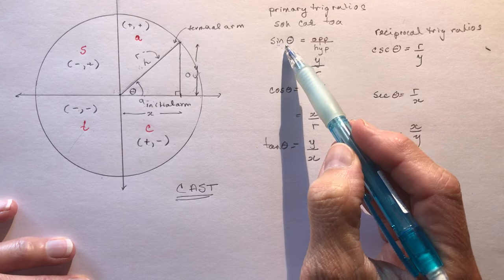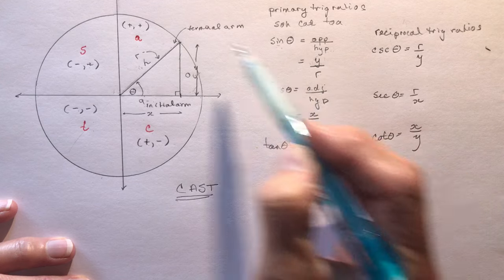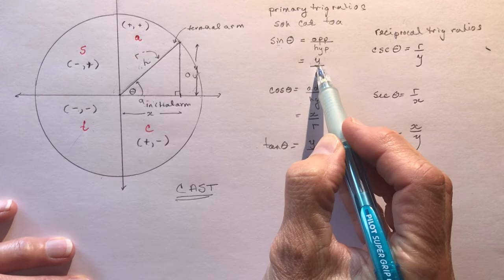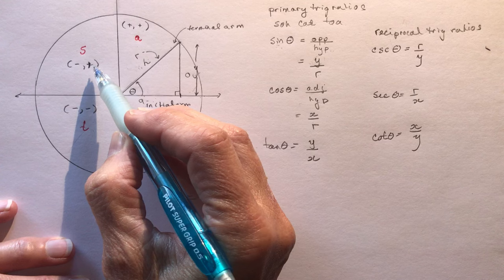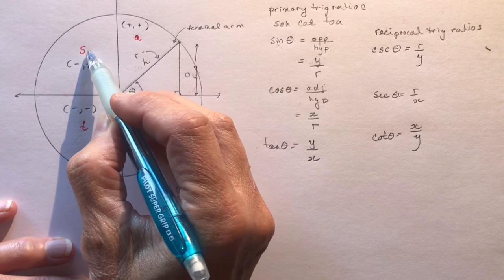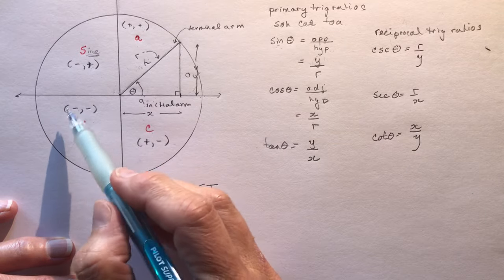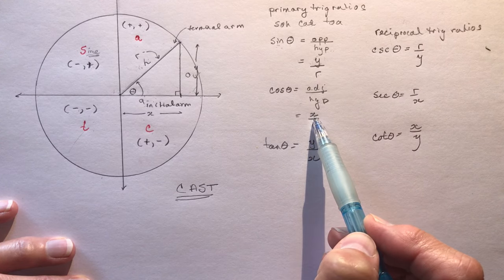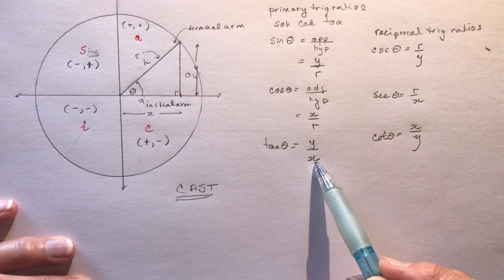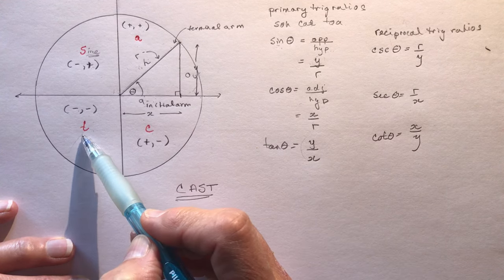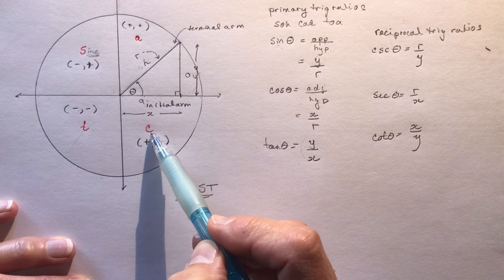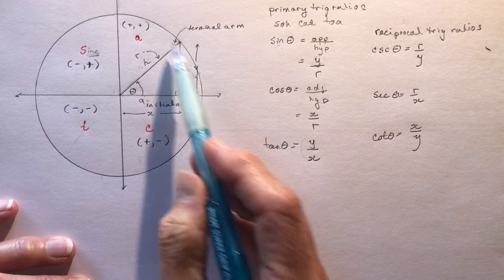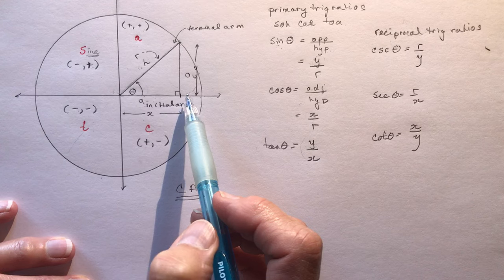If R is always 1, then sine of theta is determined by the Y value. Y is positive in the first and second quadrants, so sine is positive there. In the third quadrant, both X and Y are negative — negative over negative — which makes tan positive. And cosine is positive in the fourth quadrant because X is positive and R is always positive (X over R). That gives you the CAST rule.